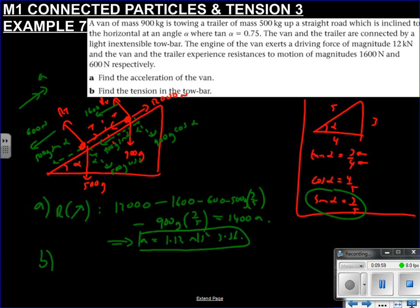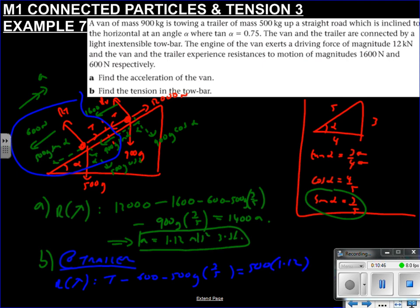Part B says find the tension in the tow bar. Again, we can't do anything unless we isolate one particle. What's the easiest particle to deal with? Which one has less forces on it? Well, the trailer looks to me like it's got the least amount of forces on it. So I'm going to stick with the trailer. So I'm going to write at trailer. Tell whoever it is what you're doing. I'm resolving up the slope. T is going up the slope. We're subtracting 600 and also 500g sin alpha. But again, we know that's 3 by 5 now.